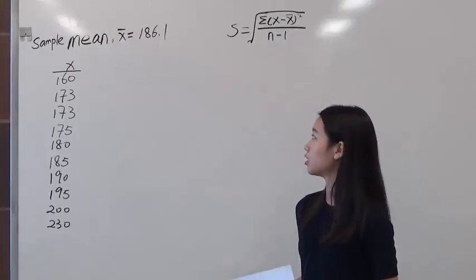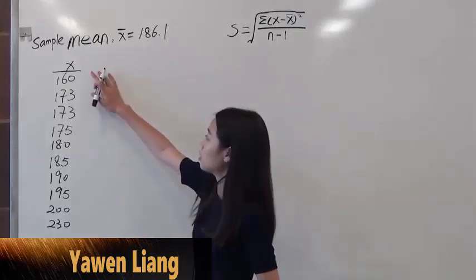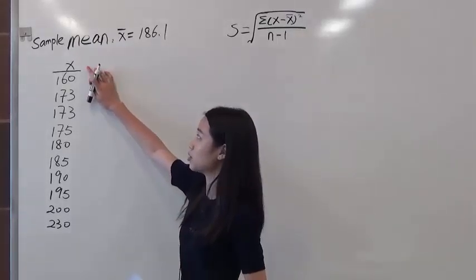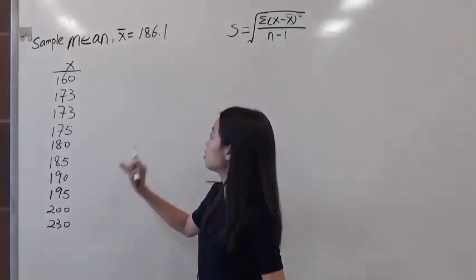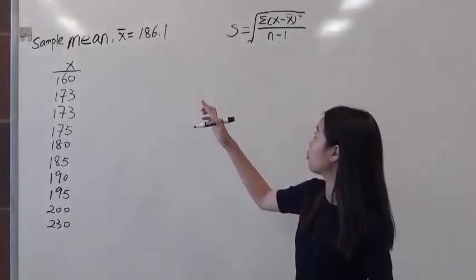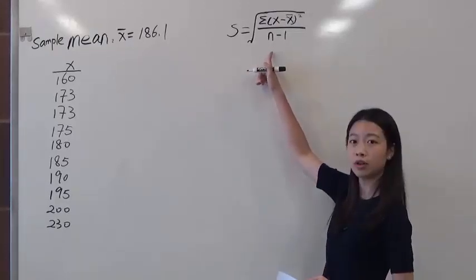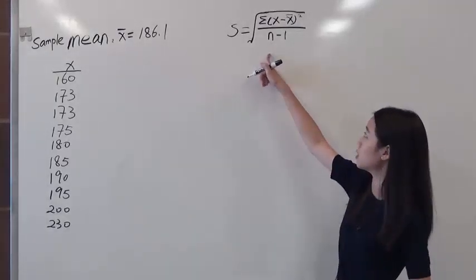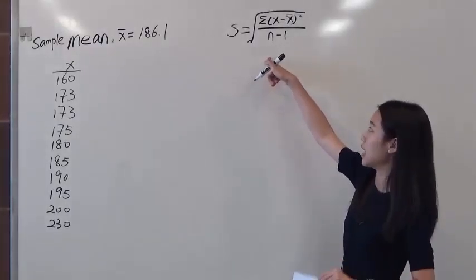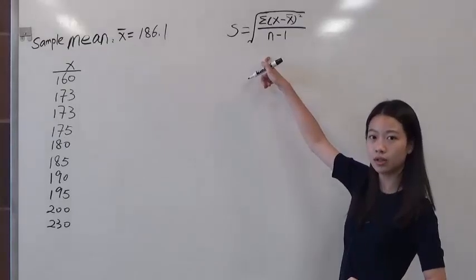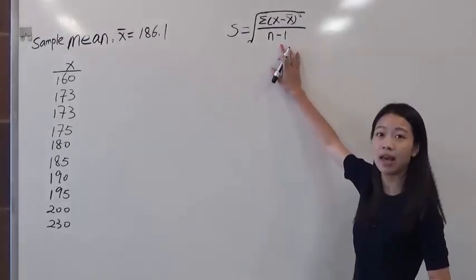Now we start working on the standard deviation of the data set. Since we have the number of data which represents x, x is the number of data set. In order to find a standard deviation, we have to use the formula which means you can calculate this standard deviation. In this case, it's a sample case, so we have to use the number divided by n minus 1.